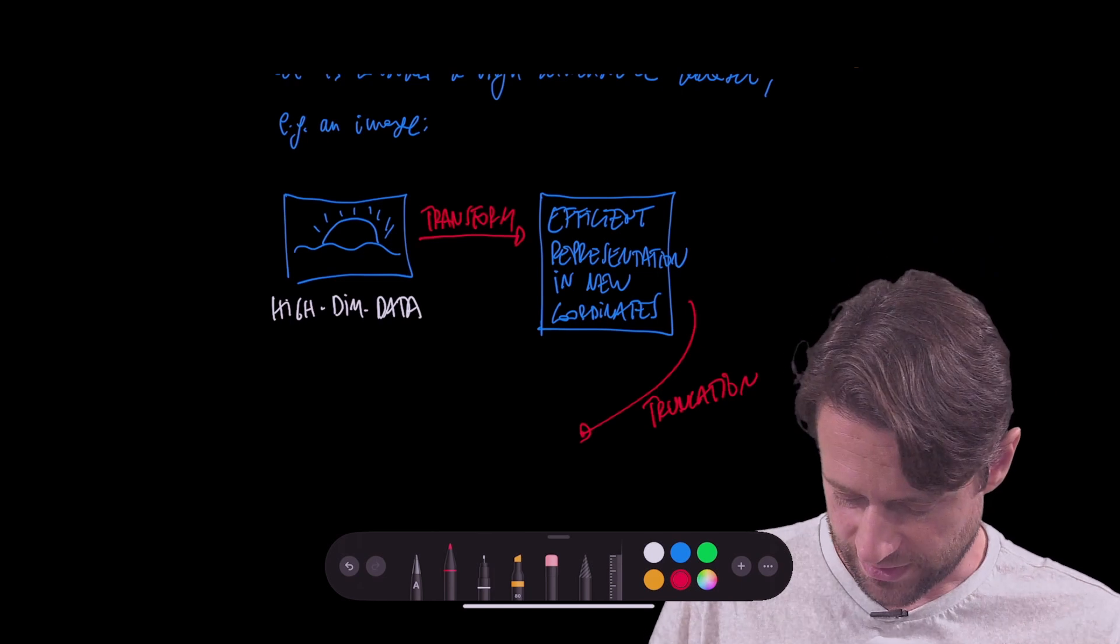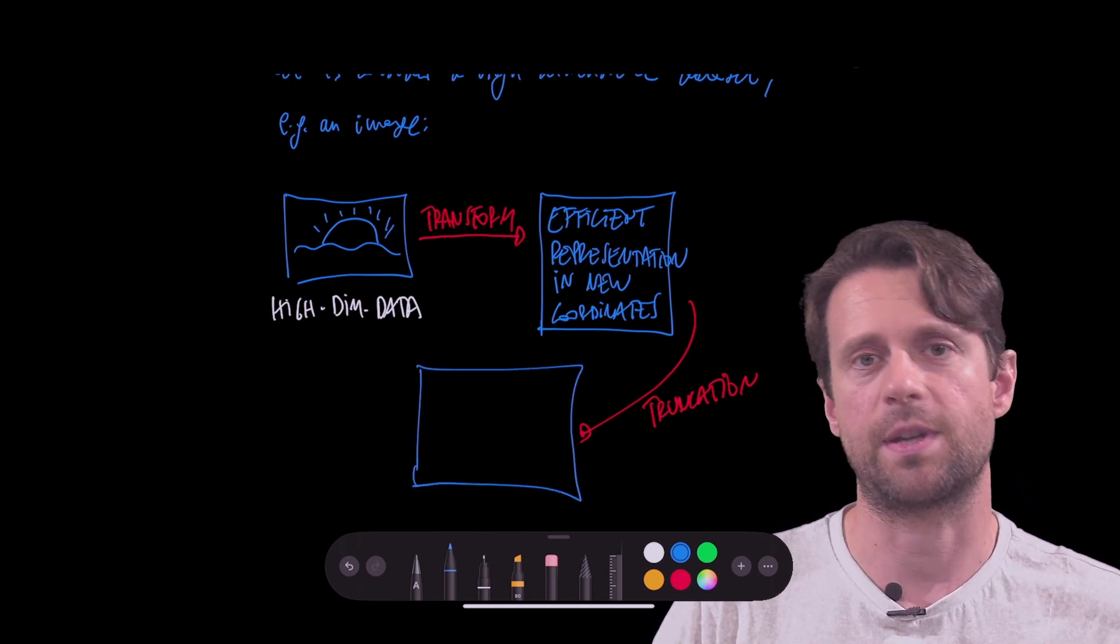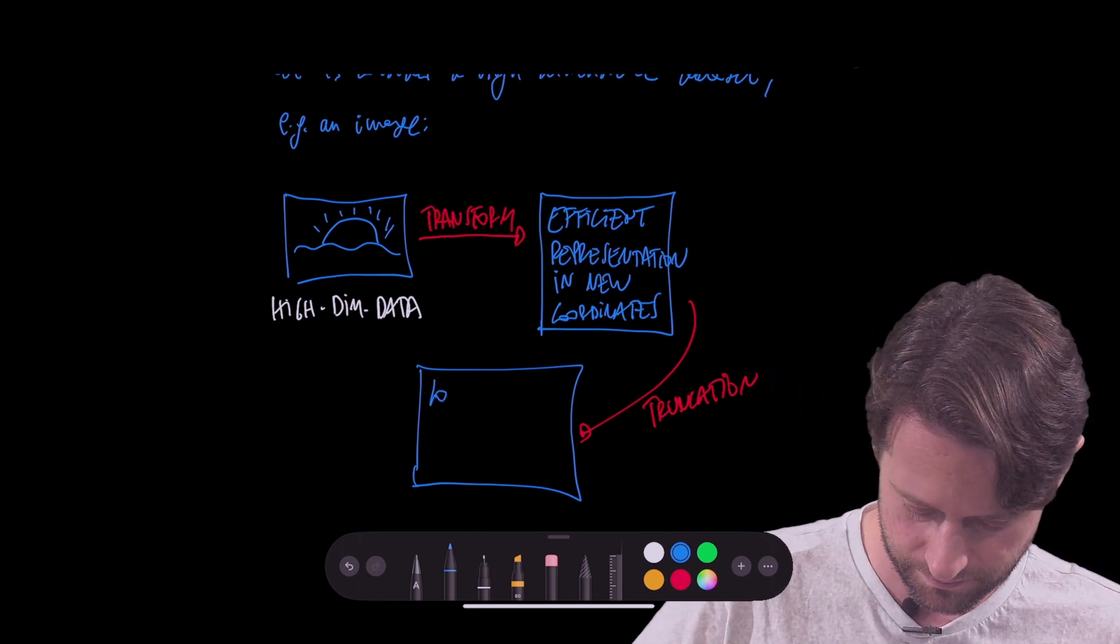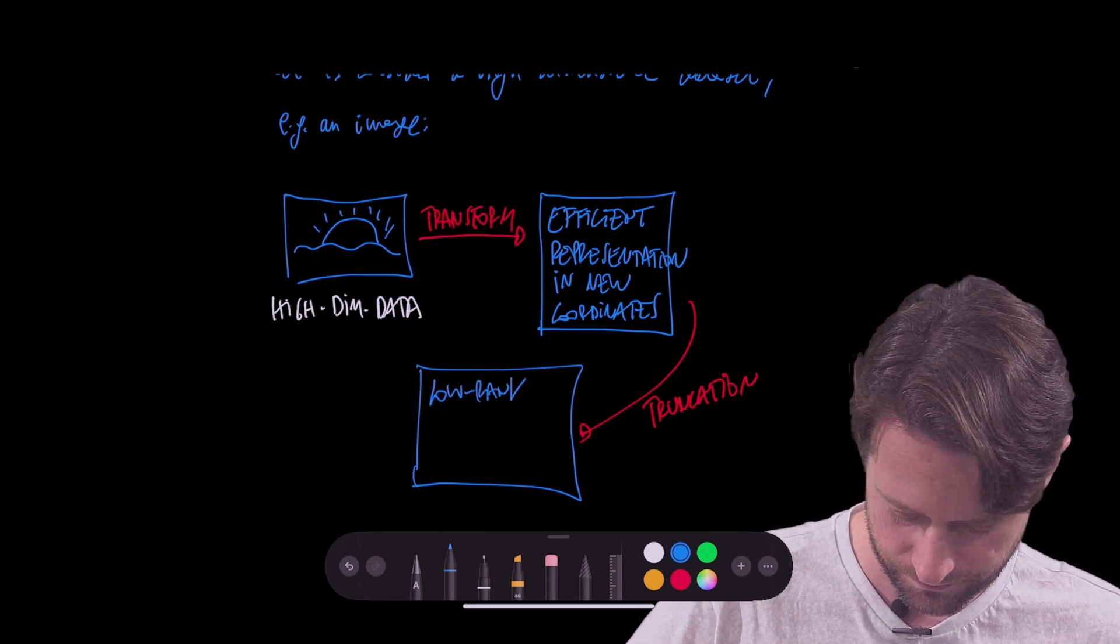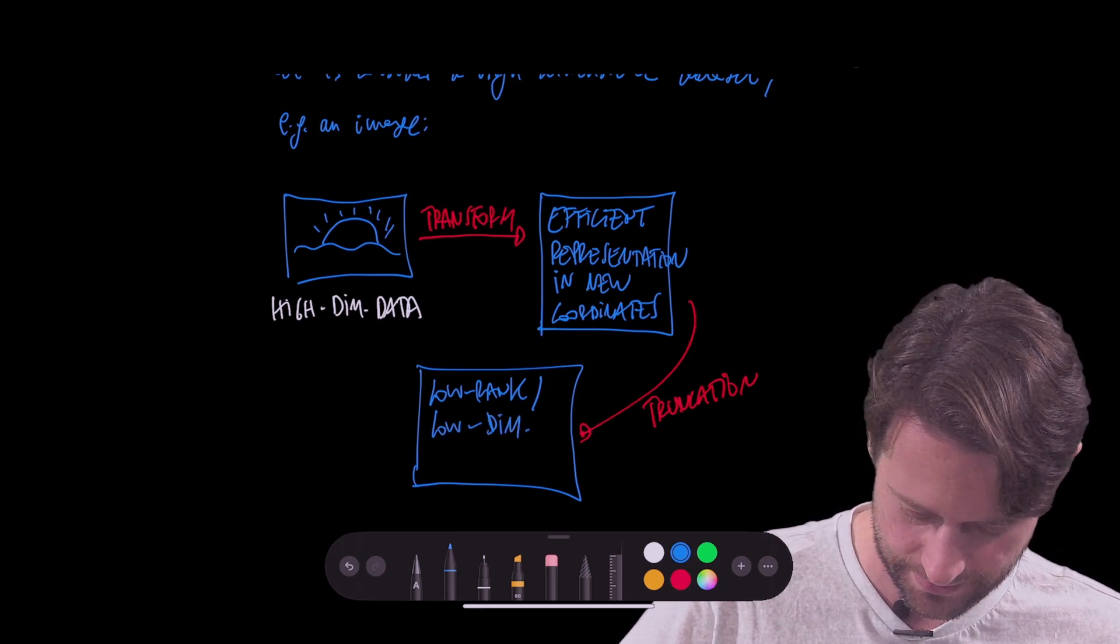After we do the truncation, we end up with basically a reduced dimensional version of the same data. So a low rank or low dimensional approximation.